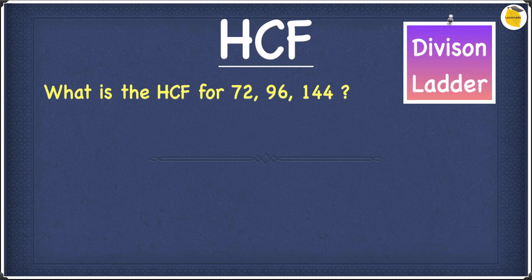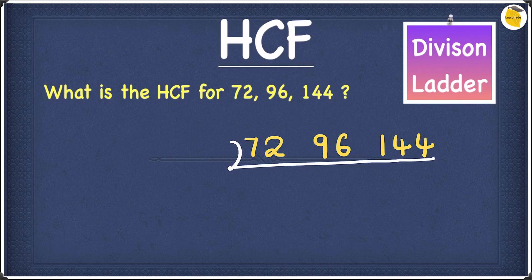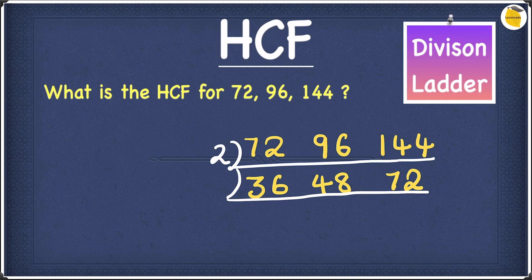Let's look at this example: what is the HCF for 72, 96, and 144? We're going to solve this using the division ladder. A common factor for all three is 2: 2 goes into 72 thirty-six times, into 96 forty-eight times, and into 144 seventy-two times. Next, a common factor between 36, 48, and 72 is 3: 3 goes into 36 twelve times, into 48 sixteen times, and into 72 twenty-four times.